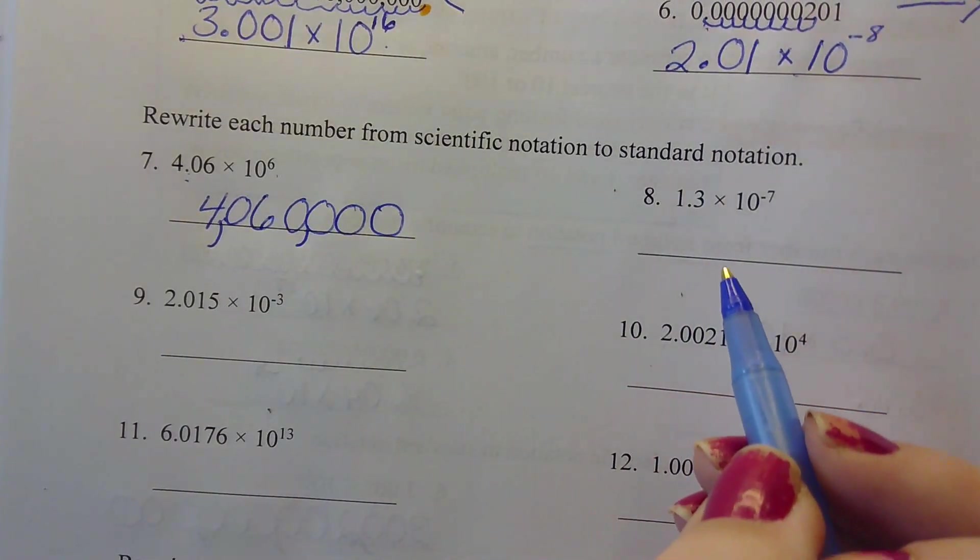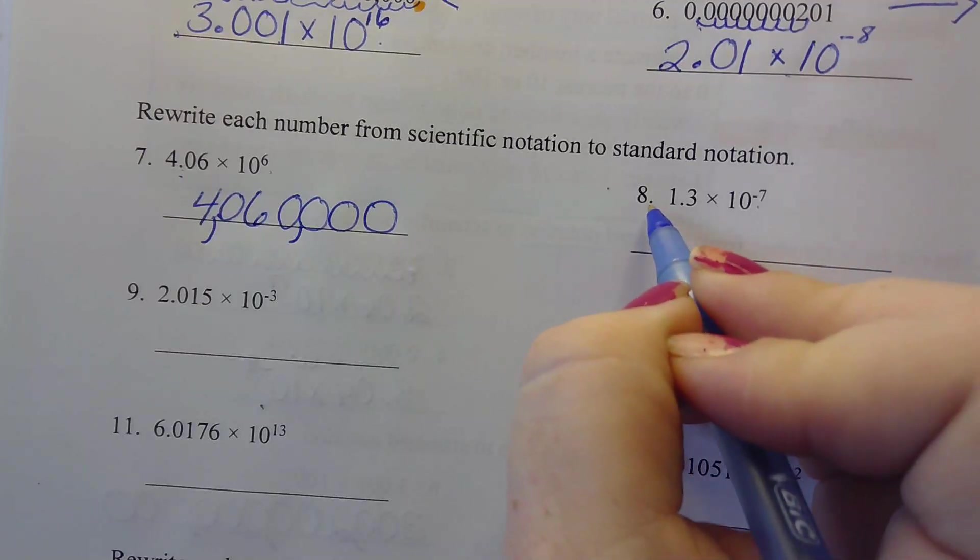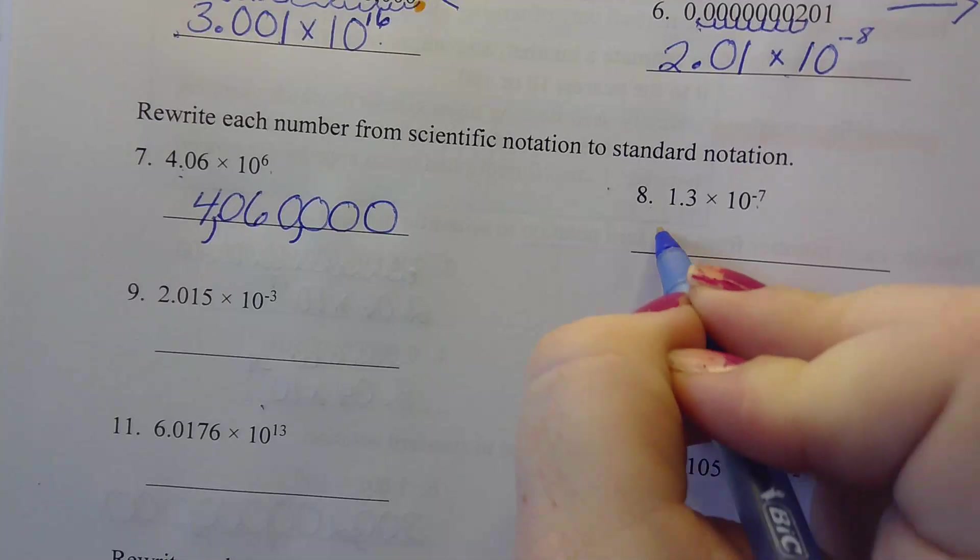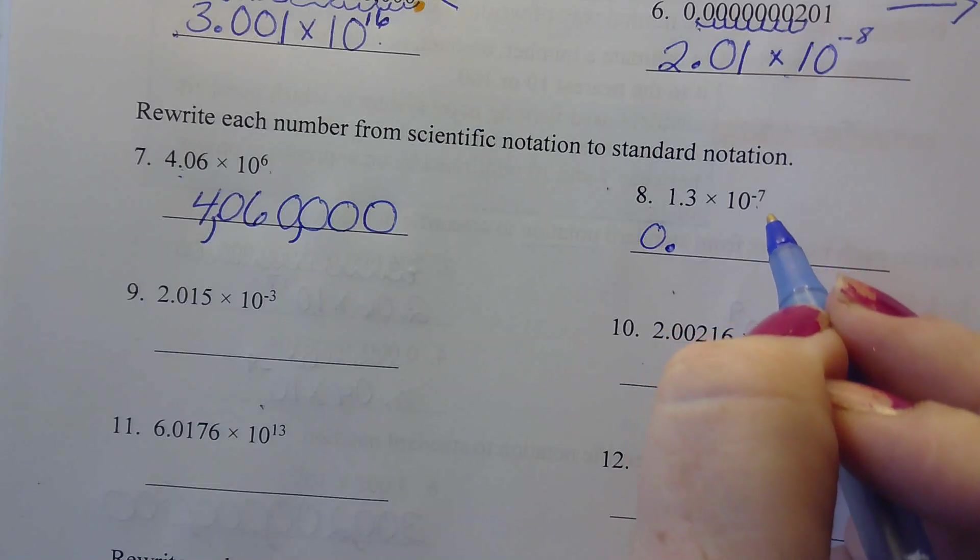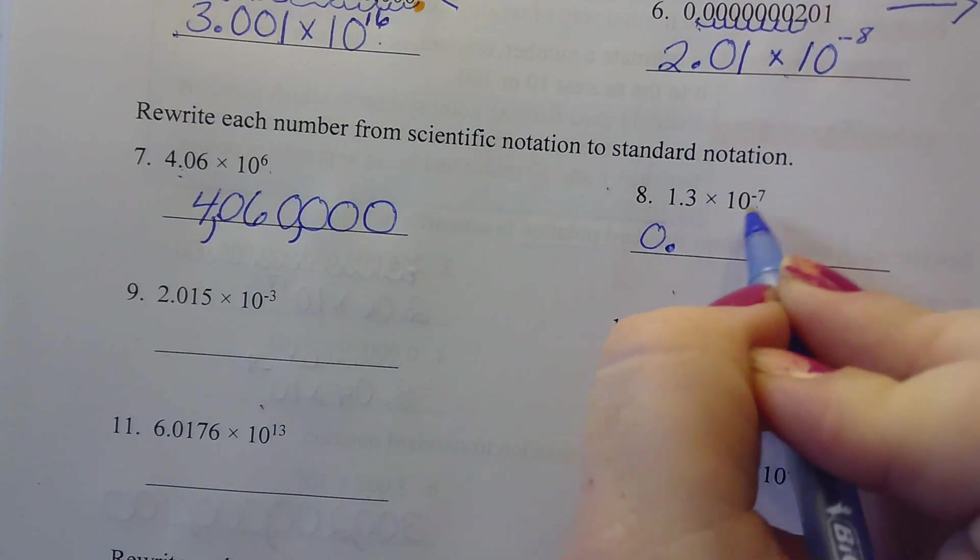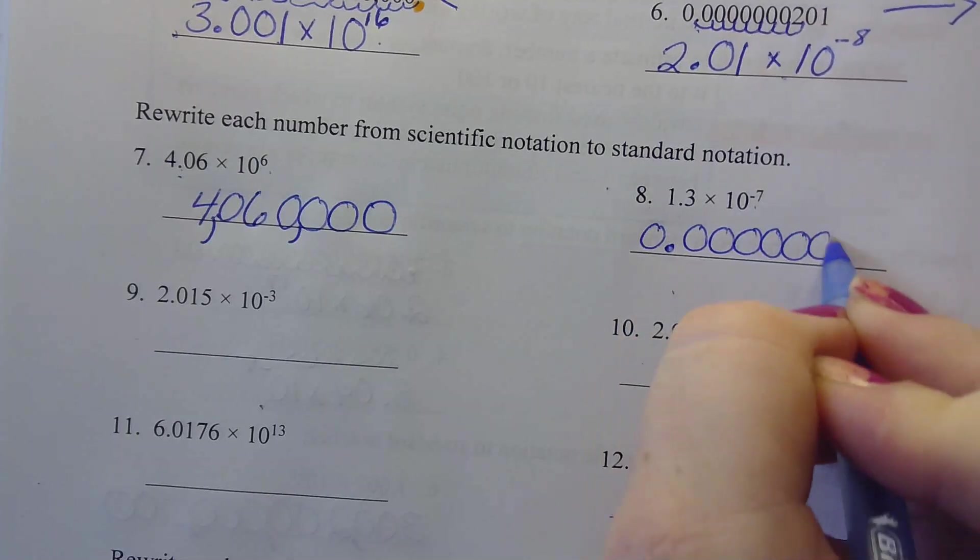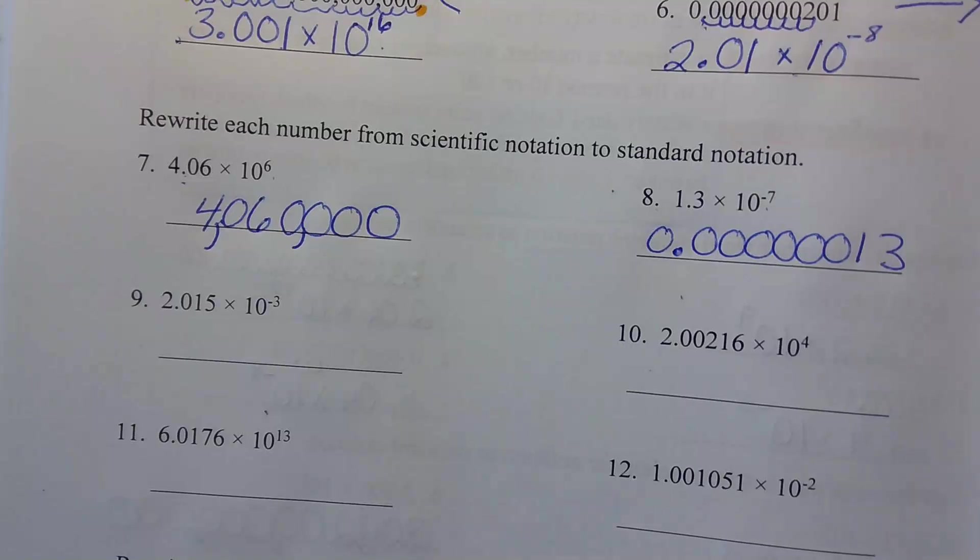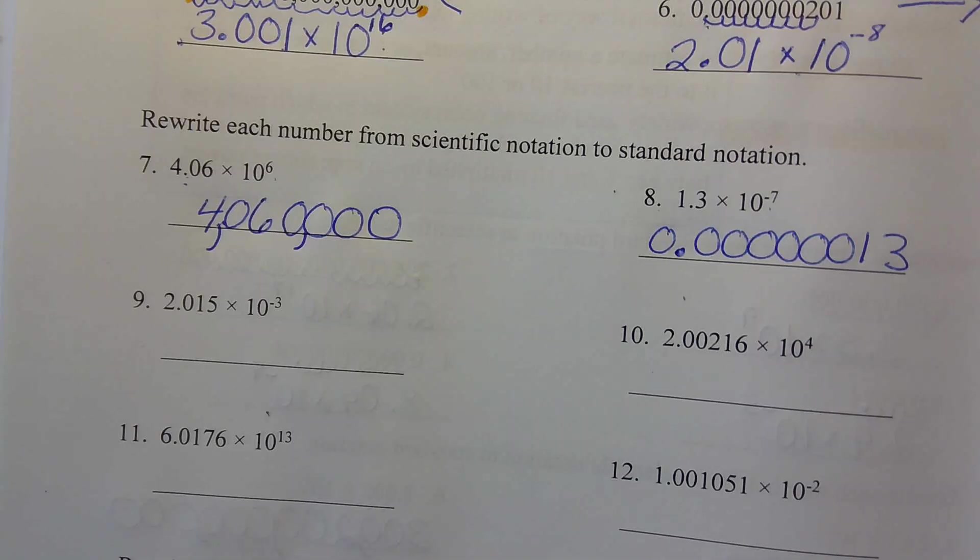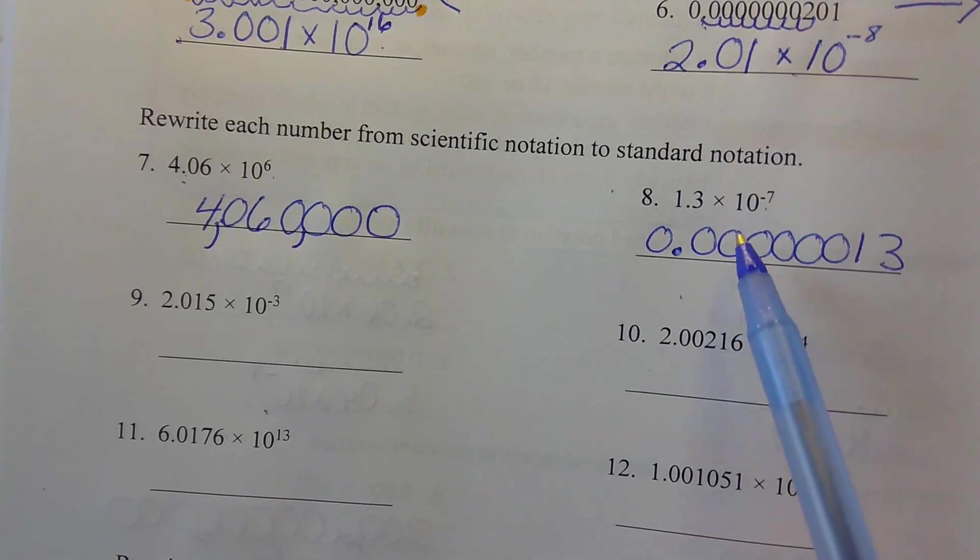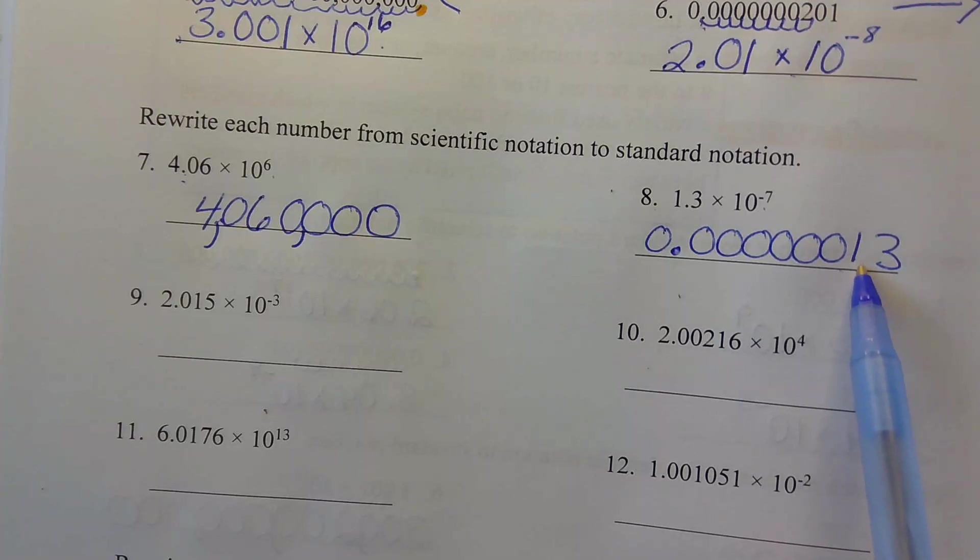Number 8 has a negative number, so we're getting smaller. How many places, how many zeros do I need to add over here before the decimal? 6. I need to add 6 because it says negative 7 and we've already got a 1 here. So we're going to go 1, 2, 3, 4, 5, 6, 1, 3. If you're not sure why we added 6 zeros, it's because when we move that decimal 7 places, it puts us right here after the 1.